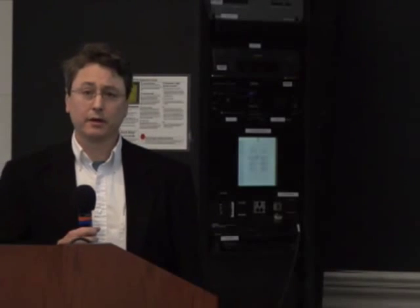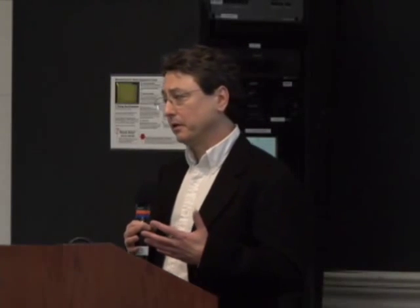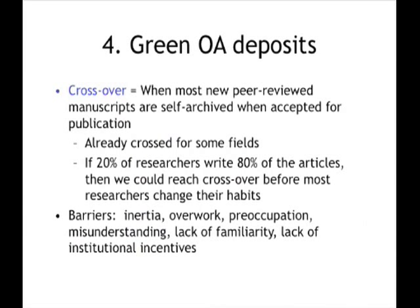There'll be an important crossover when most peer-reviewed manuscripts are self-archived right away, or deposited in a green open access repository right after they're accepted for publication. Here we have to take the complexity of the disciplines into account. In some fields, we've probably already crossed over. In particle physics, it appears that 100% of new literature is deposited in some form — at least a preprint by the authors, and many peer-reviewed manuscripts are also deposited right away. Other disciplines are very far from the crossover point. If 20% of the researchers publish 80% of the articles, and if we can appeal to the most productive researchers first, then we can reach this crossover long before we change the habits of most researchers.